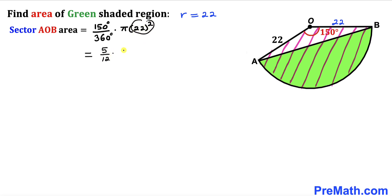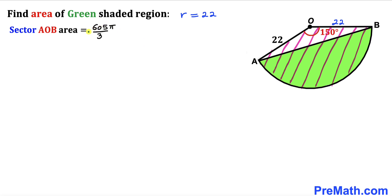Continuing the simplification: 5 divided by 12 times 22 squared, where 22 squared equals 484, times pi. Simplifying everything on the right-hand side gives us 605π divided by 3. Therefore, the area of sector AOB is 605π divided by 3 square units.